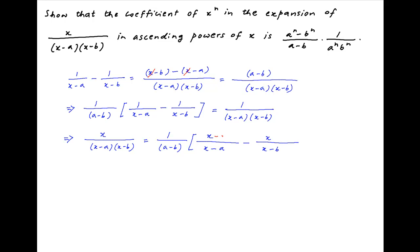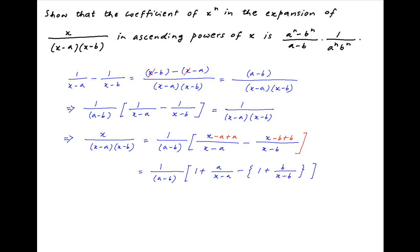Now add and subtract a in the numerator of the first term, and add and subtract b in the numerator of the second term. Therefore, this expression is equal to 1 upon (a minus b) times the quantity [1 plus a upon (x minus a)] minus [1 plus b upon (x minus b)].